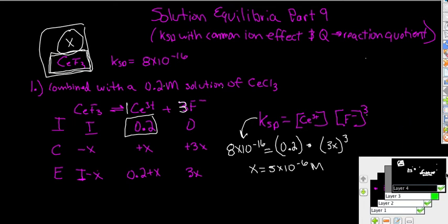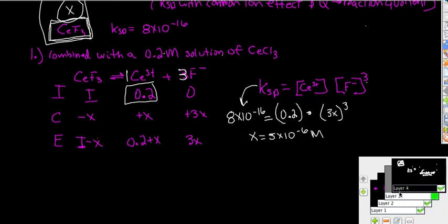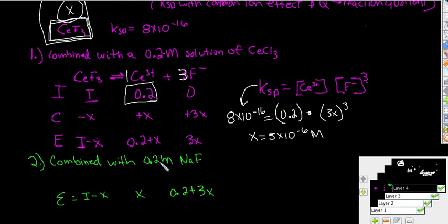And let's do something else. Let's look at a similar idea. What would it be like if I combine it with a 0.2 molar NaF solution? Well you see what that would do. That would add the Na wouldn't do anything because it's a neutral ion. But in this case the fluorine would do something because it's common ion with the cerium fluoride. So the only thing that would do differently is it would add the 0.2 to the fluoride instead of to the cerium. So our equilibrium expression down here would just be x and this would be 0.2 plus 3x.